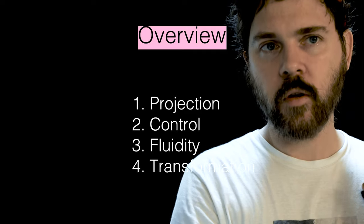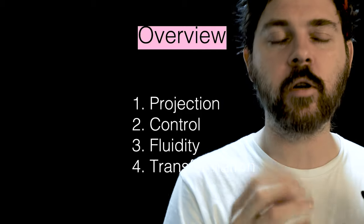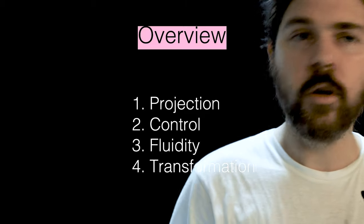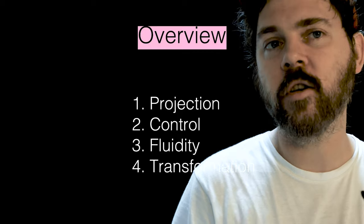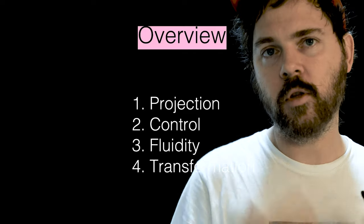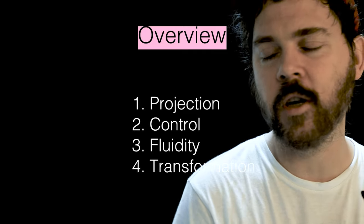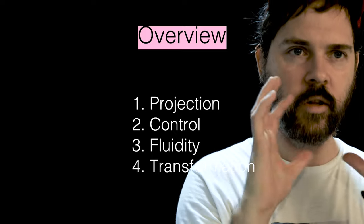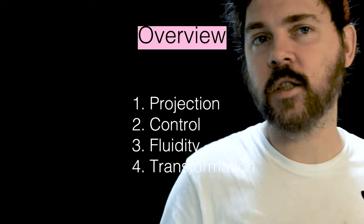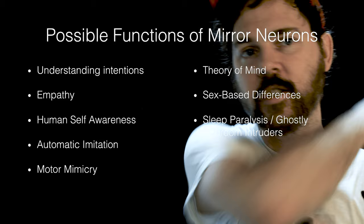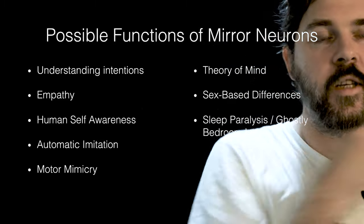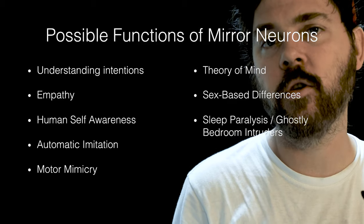Technology here can function as a mirror, throwing something back that is already in us. You often realize that when you talk about the implications or possibilities of technology, you very quickly come back to what you are, or what the possibilities and limitations of a human being are. In this way of thinking, technology functions as a mirror — which is why I gave a subtitle to this talk referencing mirror neurons.